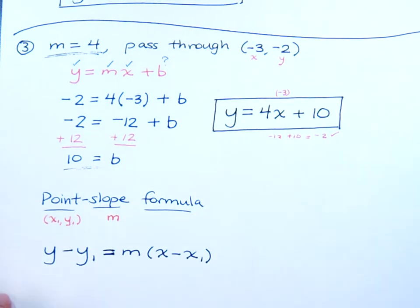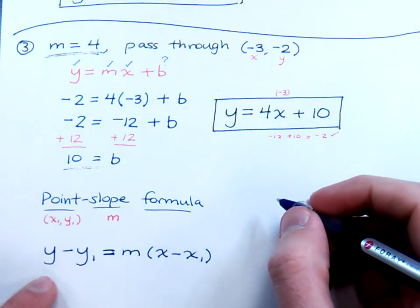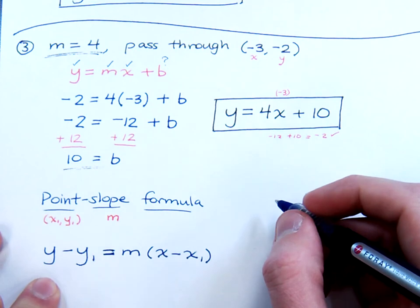So, you know what? Let's go ahead and use the last example, this number 3, in the point-slope formula and see what happens. I mean, as long as we do everything correctly, we should get the same result. So, here's my formula. Let's go ahead and plug into that.